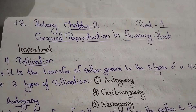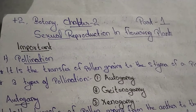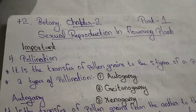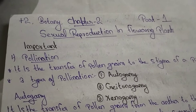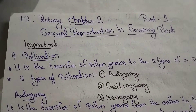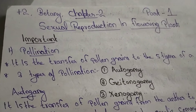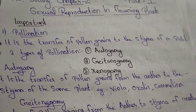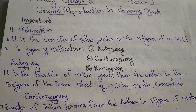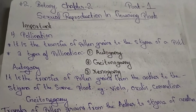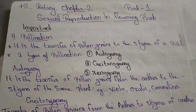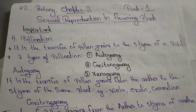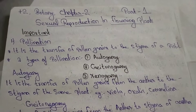Autogamy. It is a transfer of pollen grains from anther to the stigma of the same plant. Same plant — it is a transfer of pollen grains from anther to stigma.